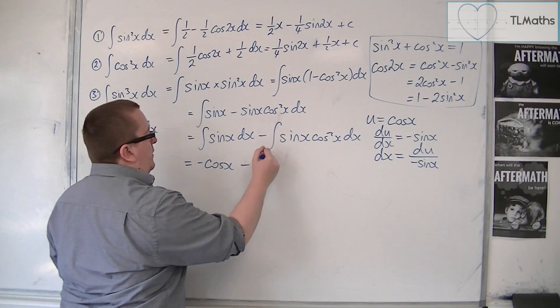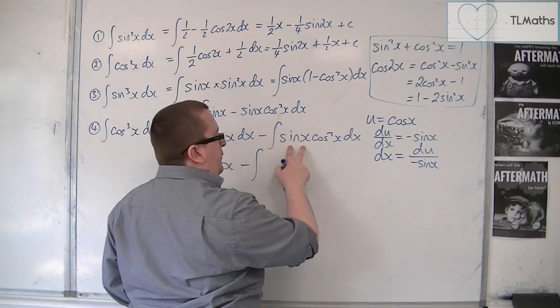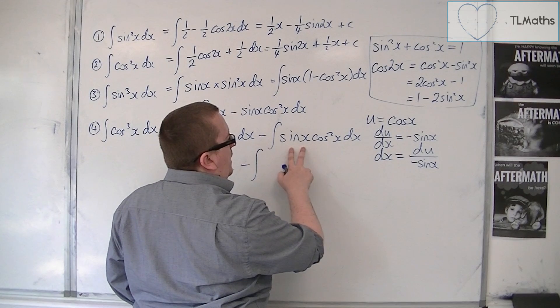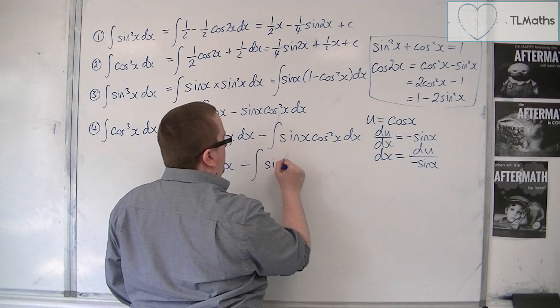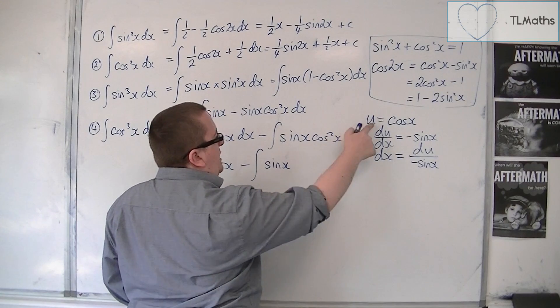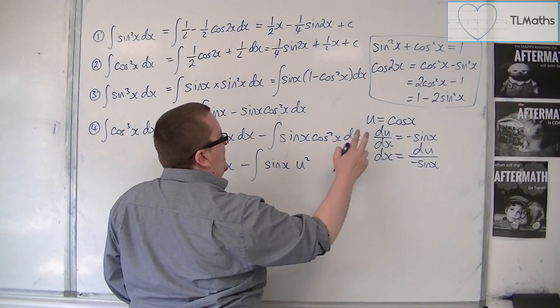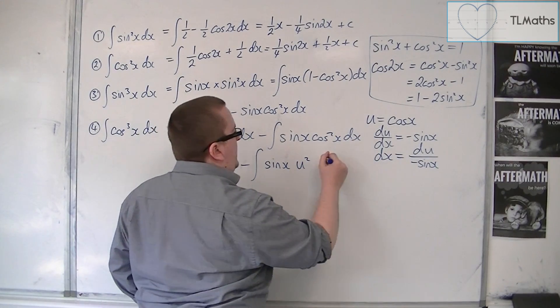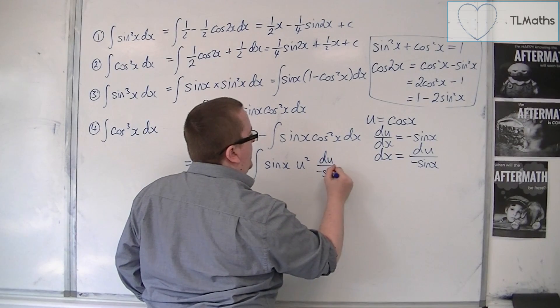Then we've got, take away the integral. Now, sinx has not been replaced, so sinx is still there. Cos squared is replaced with u squared. And dx is replaced with du over minus sinx.